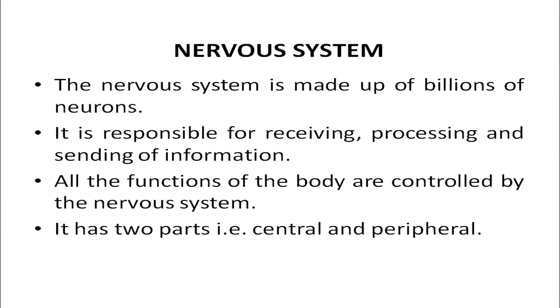First of all we should understand what is a nervous system. The nervous system is made up of billions of neurons. The neurons make a network of connections and it is responsible for receiving, processing, and sending of information. All the functions of the body are controlled by the nervous system. It has two parts: the central nervous system and the peripheral nervous system. The network formed by the neurons is known as the nervous system.